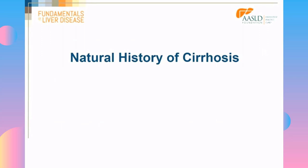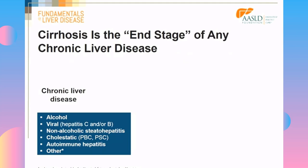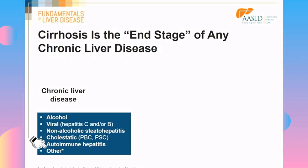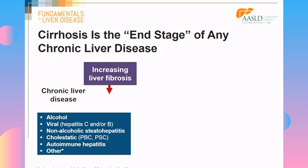Cirrhosis is considered the end stage of any chronic liver disease. The most common causes are alcohol, viral hepatitis — either hepatitis C or hepatitis B — non-alcoholic steatohepatitis, which is an increasing cause of chronic liver disease and cirrhosis, cholestatic illnesses, autoimmune hepatitis, and many others. Anything that chronically affects the liver is going to lead to increasing liver fibrosis, and this will lead to cirrhosis.